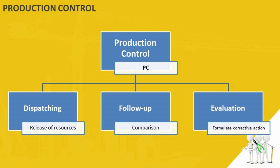Some of the sub-functions of production control are dispatching, follow-up, and evaluation. Dispatching is putting the plan into effect by the authorized release of resources to plant locations, along with the necessary instructions to commence production in accordance with the requirement of route sheets and schedule charts prepared during production planning. This task is performed by a person called the dispatcher. Dispatching can be centralized by the central office or decentralized.